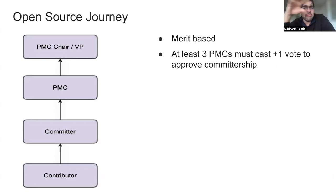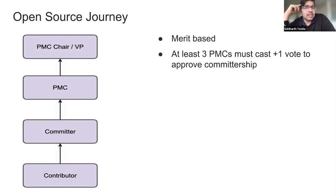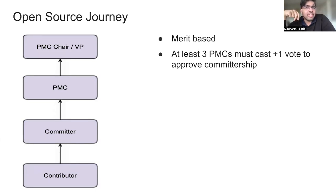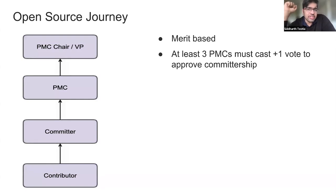Then beyond committer, you continue repeating the same stuff plus more, and you become a member of this group called PMC, which stands for Project Management Committee. As PMCs, you essentially do more of what you did to become a committer — you broaden your scope and influence, and you also participate in the release process. PMCs are able to cast binding votes on release candidates, while all other non-PMCs, including committers, have non-binding votes. That's one stark difference between a committer and PMC.